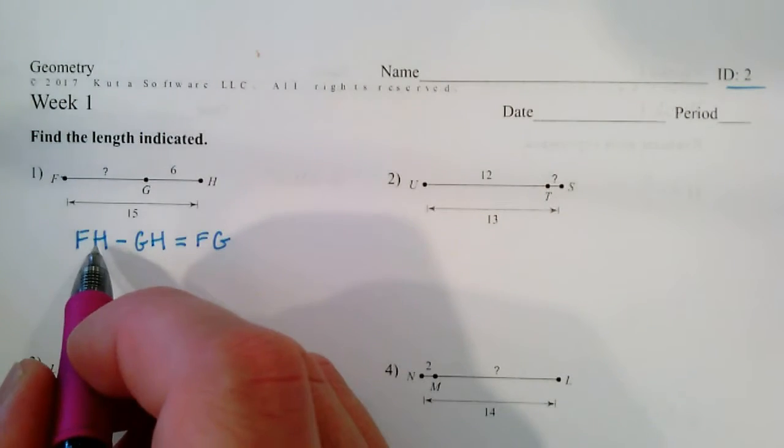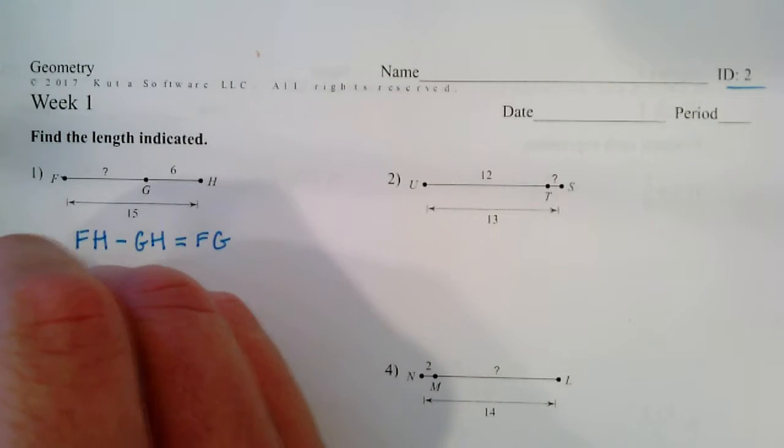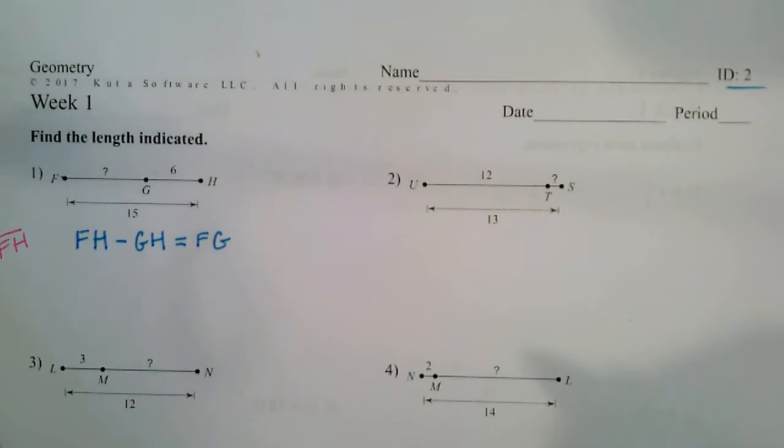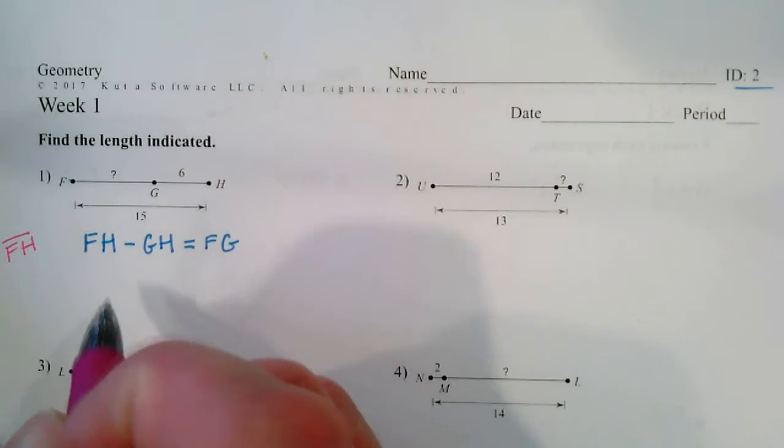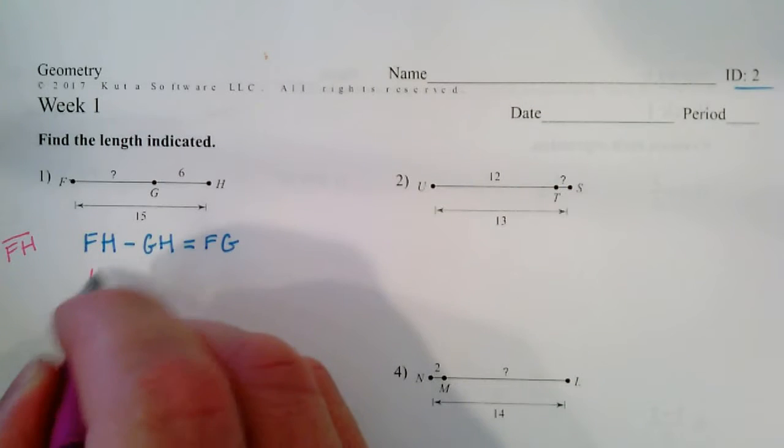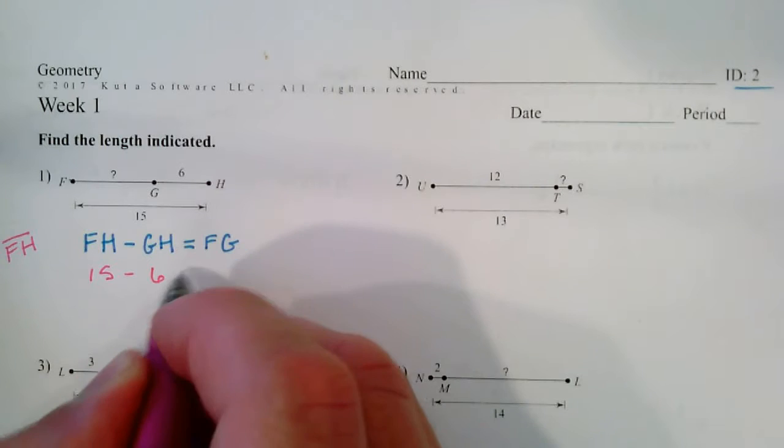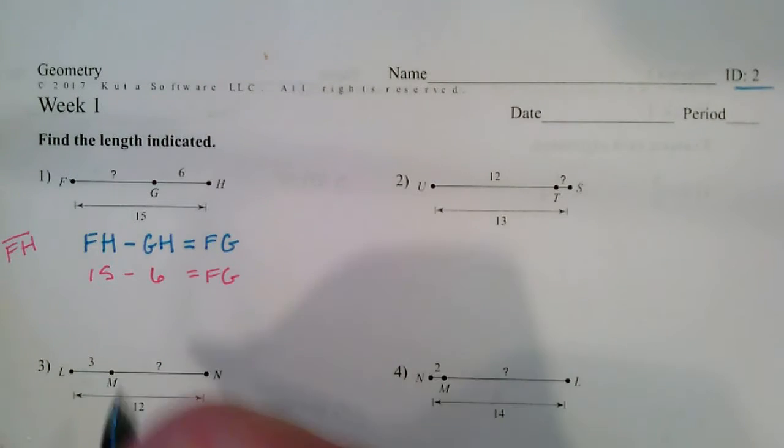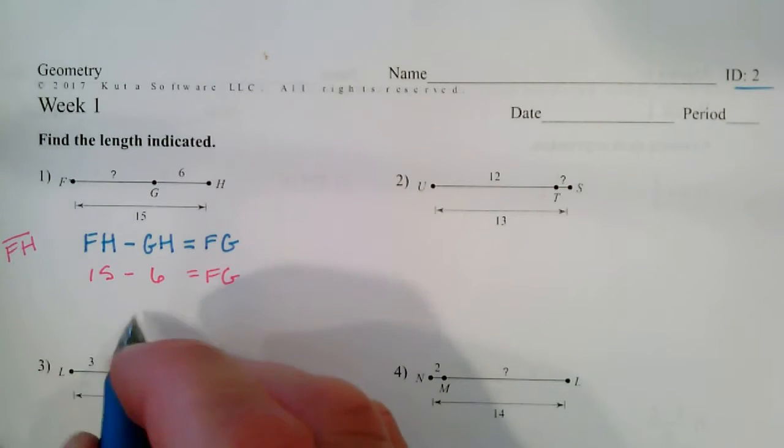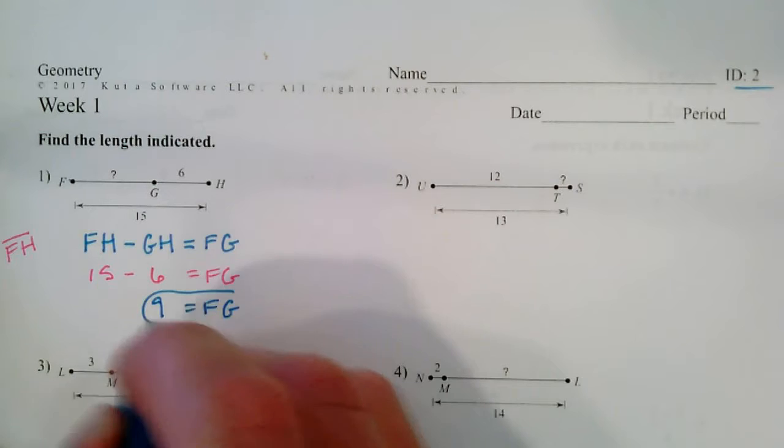Now remember, these are the lengths of the segments, not the names. If I want to talk about the name, I would put a line over top of it. Okay, so we have 15 minus 6 equals FG. 15 minus 6 is 9 equals FG. We'll put a circle around it so we can find our answer easily.